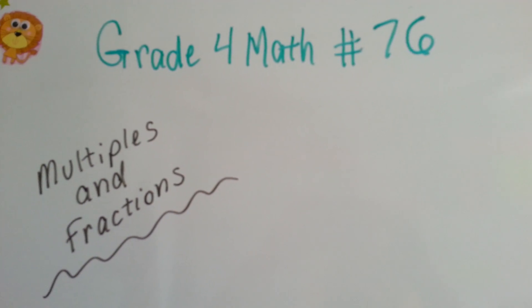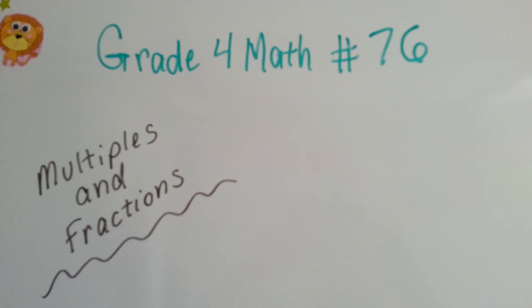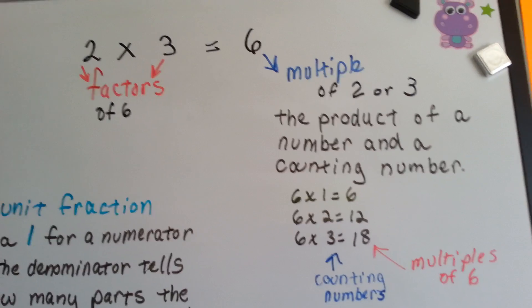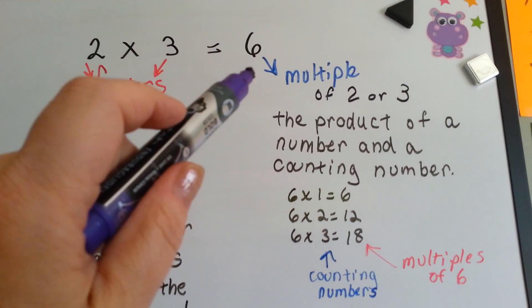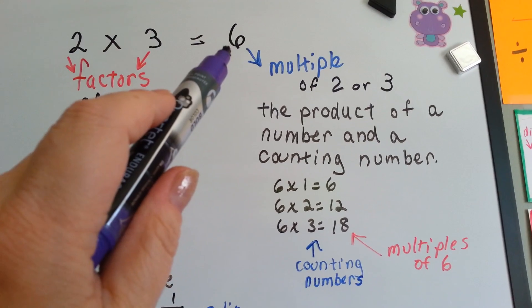Grade 4 math number 76, Multiples and Fractions. You remember what multiples are, right? They're the answers in a multiplication problem. For 2 times 3, these are the factors. The answer is the multiple.